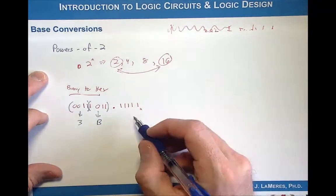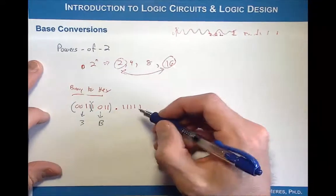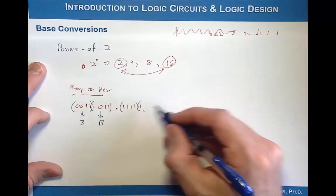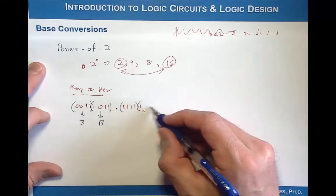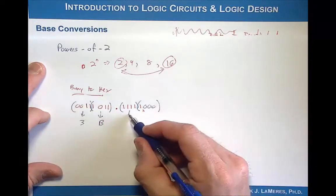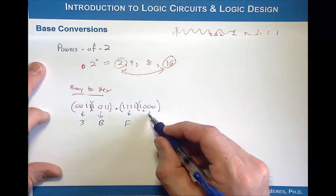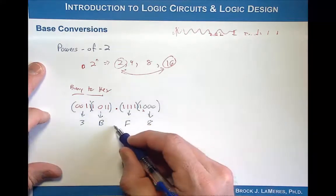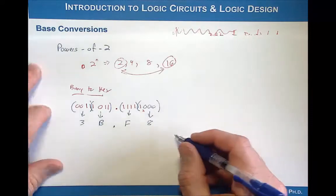And then what I do here is I start grouping starting at the radix point and I'm going to go this way and then group another here. Notice I can fill with trailing zeros, so I can go ahead and fill those in, it doesn't change anything. This then converts directly into the hex symbol F, this converts directly into the hex symbol 8.